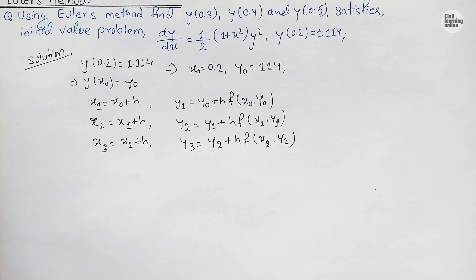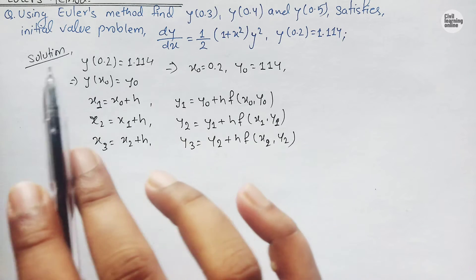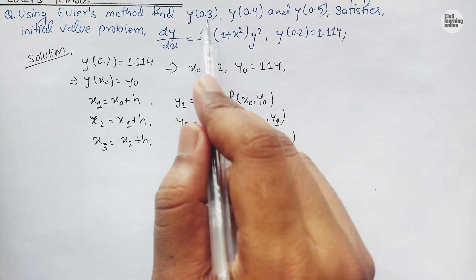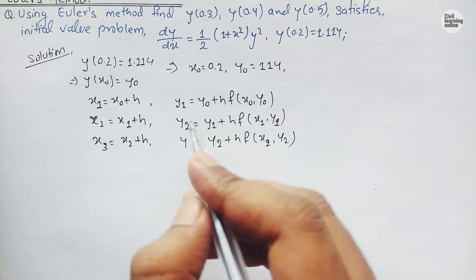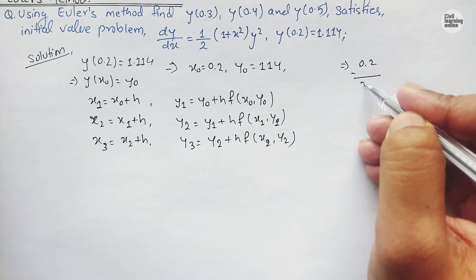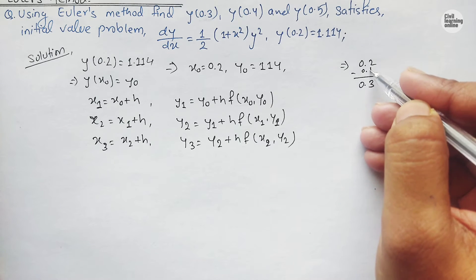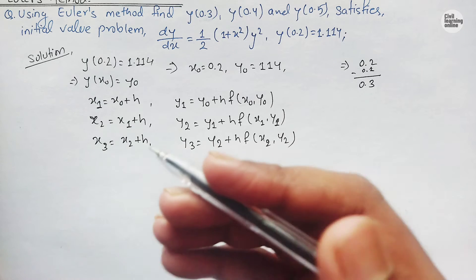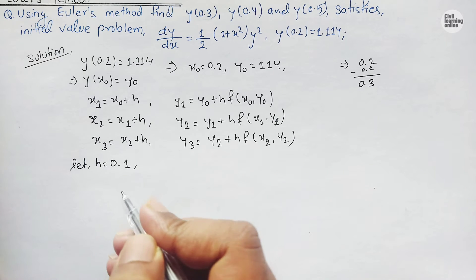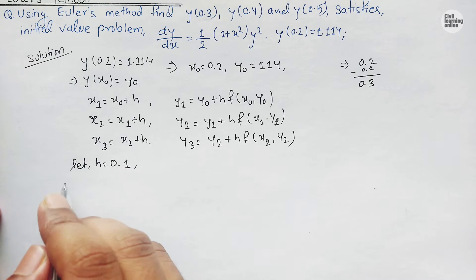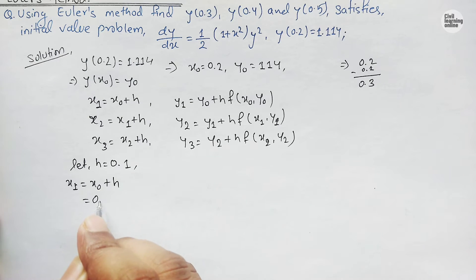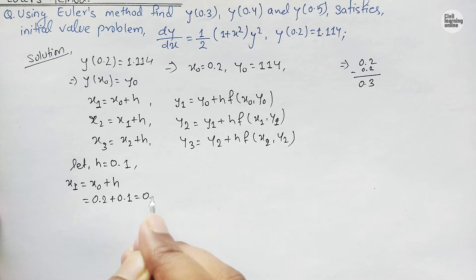In this question we are not provided with the value of h, but we are given x₀ and asked to calculate y at x = 0.3. Since we have x₀ = 0.2 and need to reach 0.3, we need to add 0.1. So let us assume h = 0.1. Therefore, x₁ = x₀ + h = 0.2 + 0.1 = 0.3.